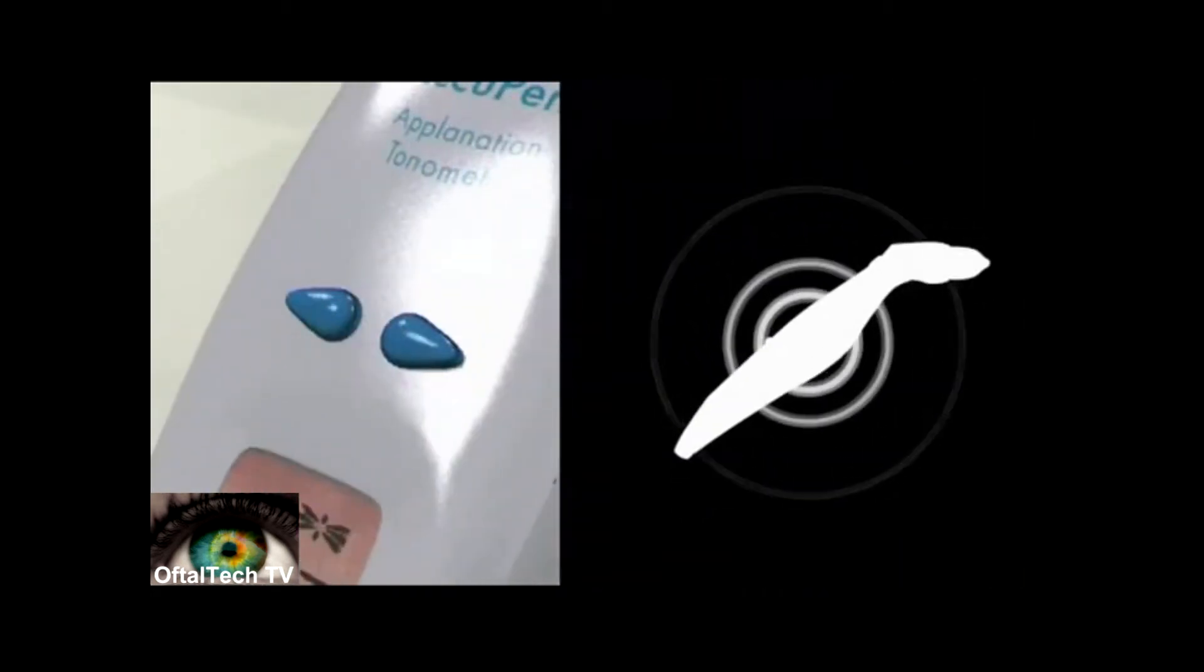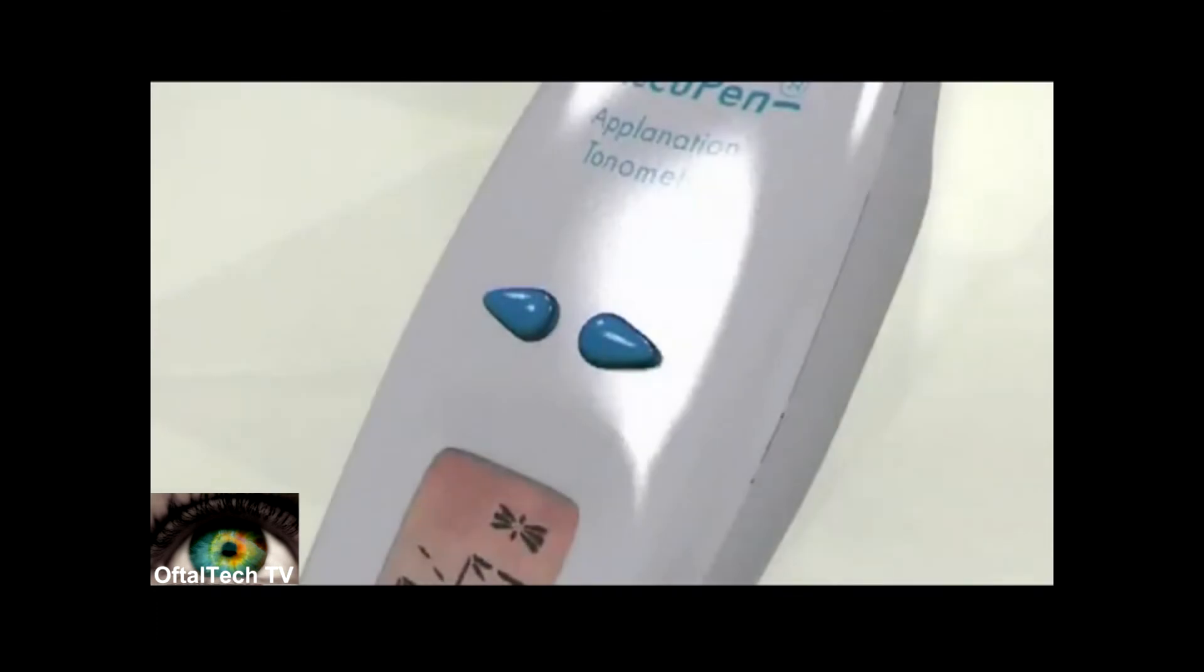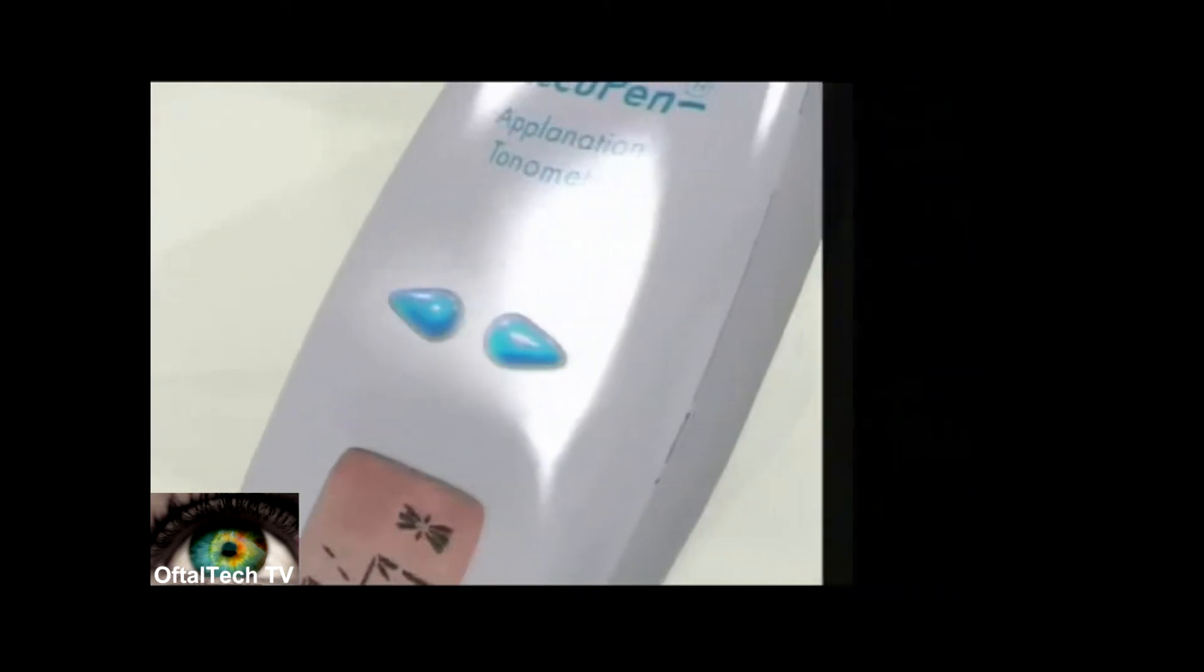After deleting one measurement, the AccuPen will automatically update the average IOP. To clear the AccuPen completely, hold down both arrow buttons for approximately three seconds. The unit will chirp indicating the measurements have been deleted.